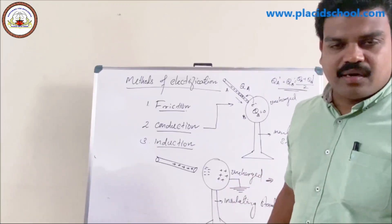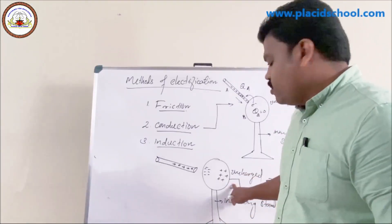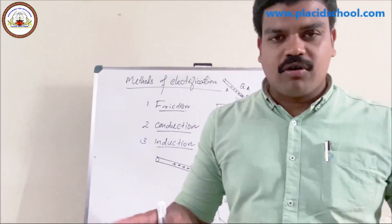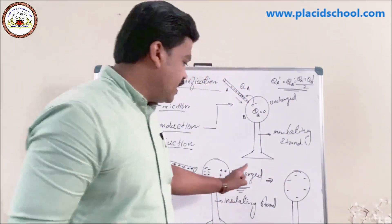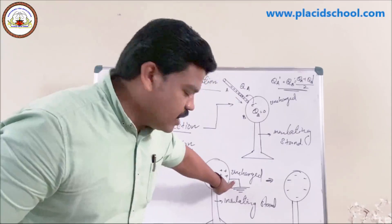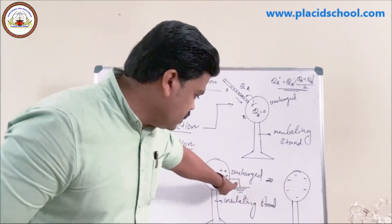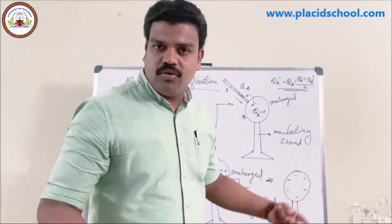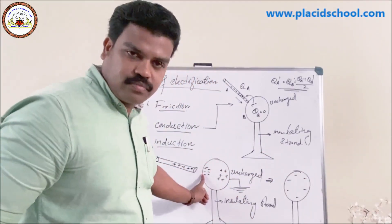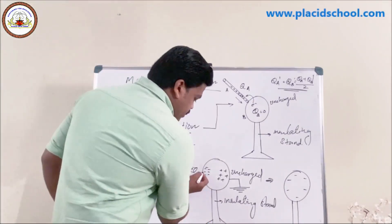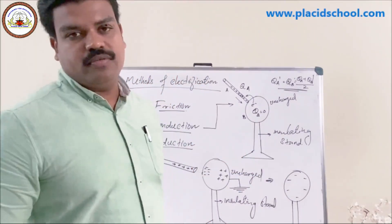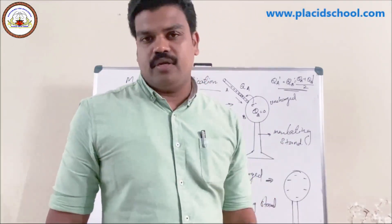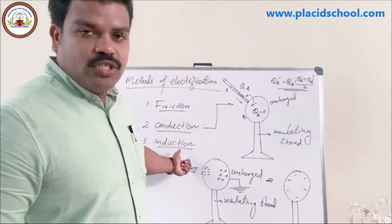Like charges repel and unlike charges attract. By using proper grounding or earthing, we can charge this body either positively or negatively. By grounding the farther side, the body becomes negatively charged. If instead we ground the nearer side, the body becomes positively charged. So by induction, we can charge the body either positively or negatively. This method is called charging by induction.